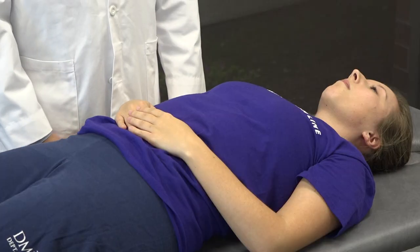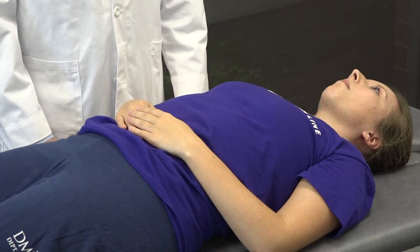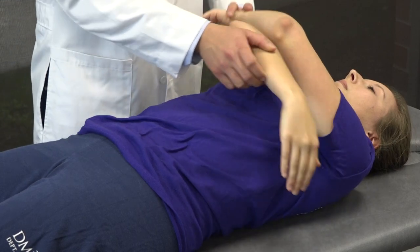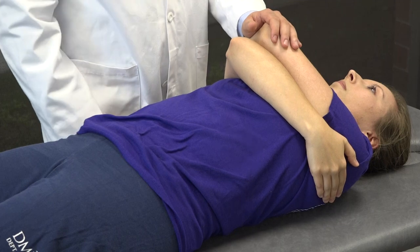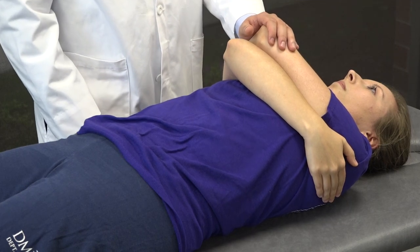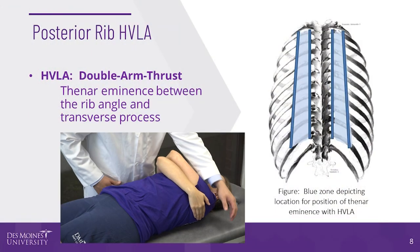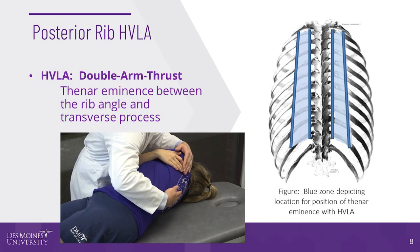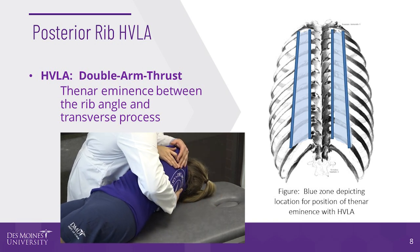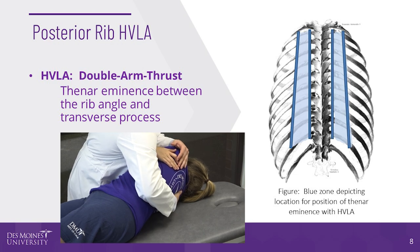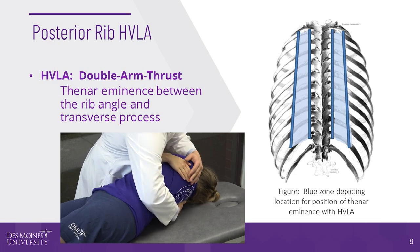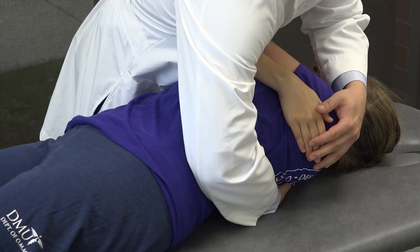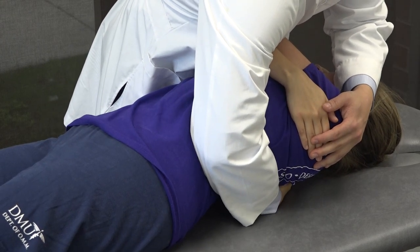The patient is supine. The physician stands on the opposite side of the posterior rib. Position the arms by crossing them across the patient's chest, making sure the arm on the side of the posterior rib is cephalad. Roll the patient towards you and sweep to find the angle of the dysfunctional rib. Place your thenar eminence between the transverse process and the rib angle. Roll the patient back onto your thenar eminence and create a vector force from your abdomen through the patient's elbows to the somatic dysfunction.